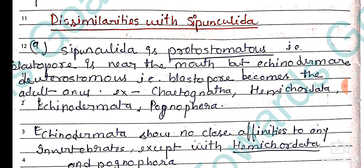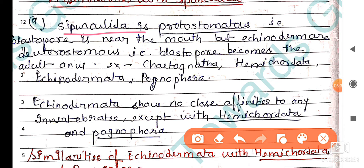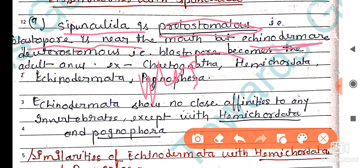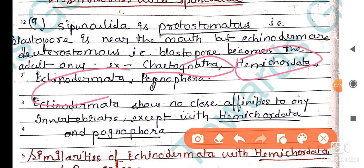Dissimilarities with Siphancolida: In Siphancolida, the blastopore is near the mouth, meaning they are protostomes — the blastopore forms the mouth, not the anus. But echinoderms are deuterostomes, meaning the blastopore forms the anus. In deuterostomes you have chaetognatha, hemichordates, echinodermata, and pogonophora.